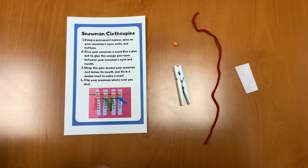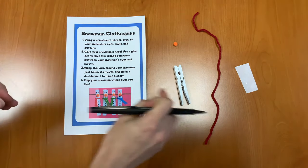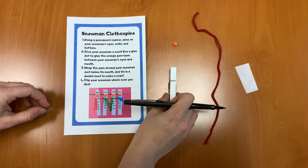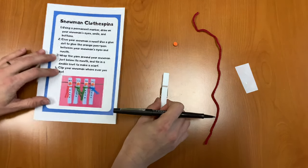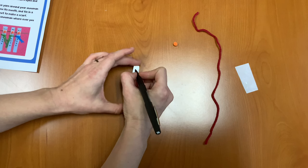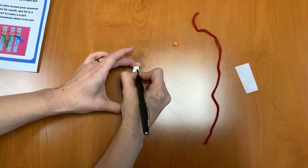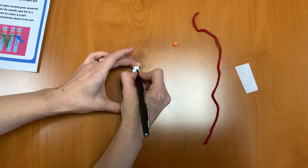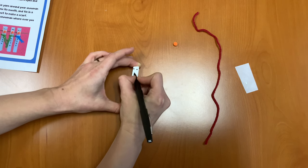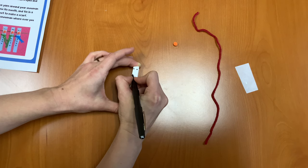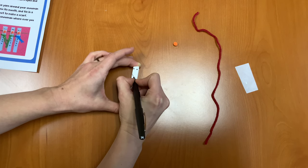Let's get started. Using our permanent marker or our black marker, we're going to draw on your snowman's eyes and smile and buttons. So I'm going to draw two eyes. I'm going to draw on a smile.